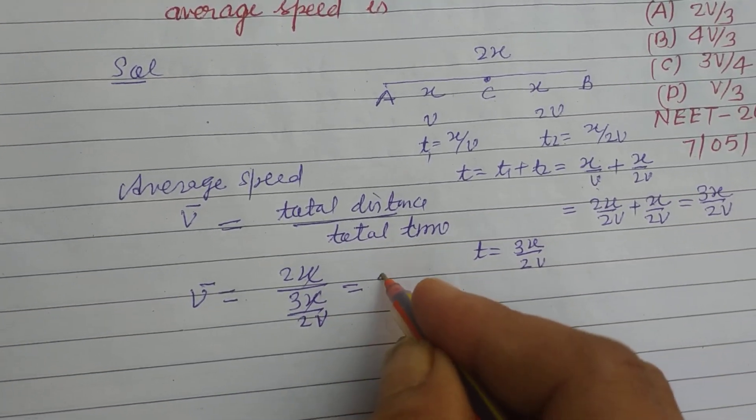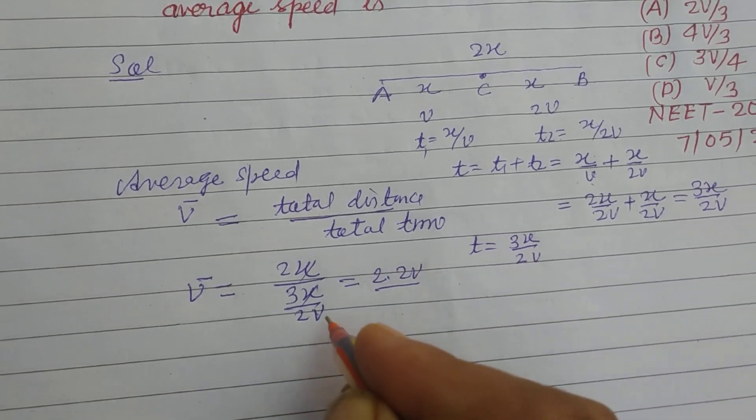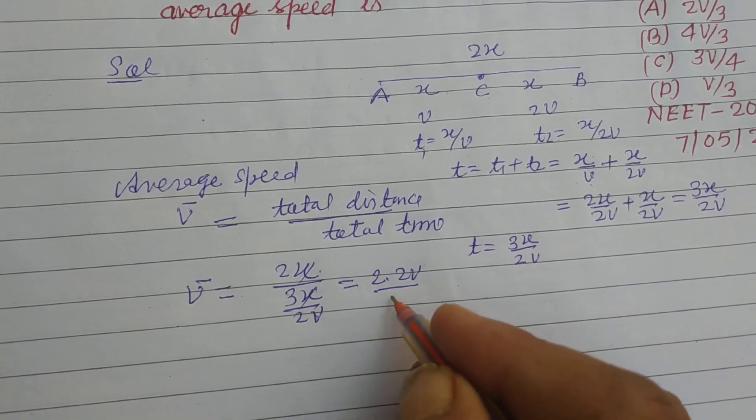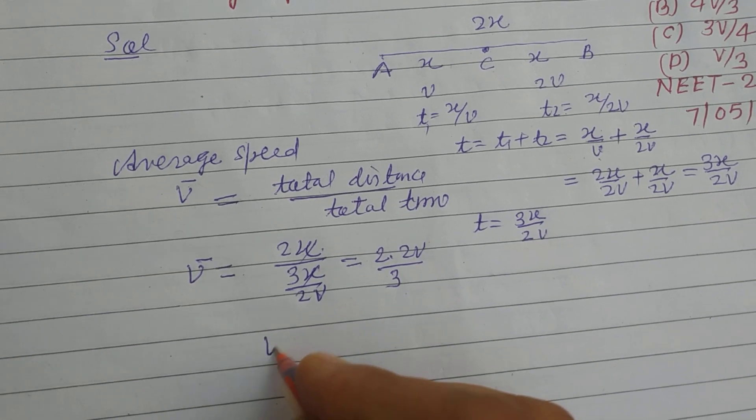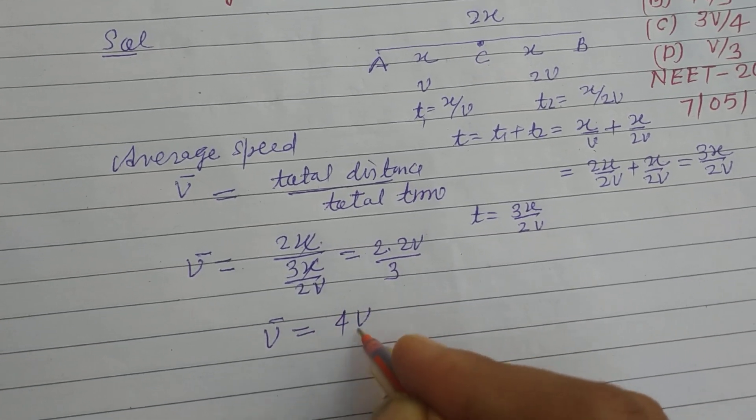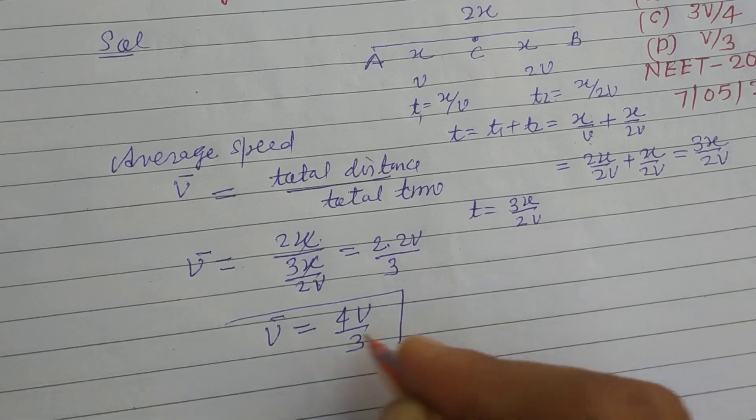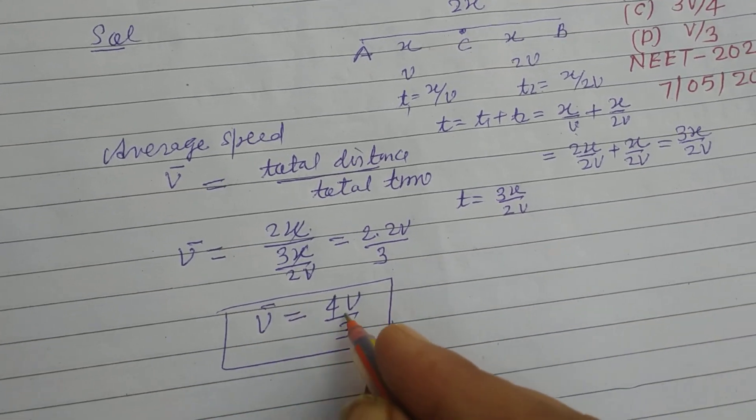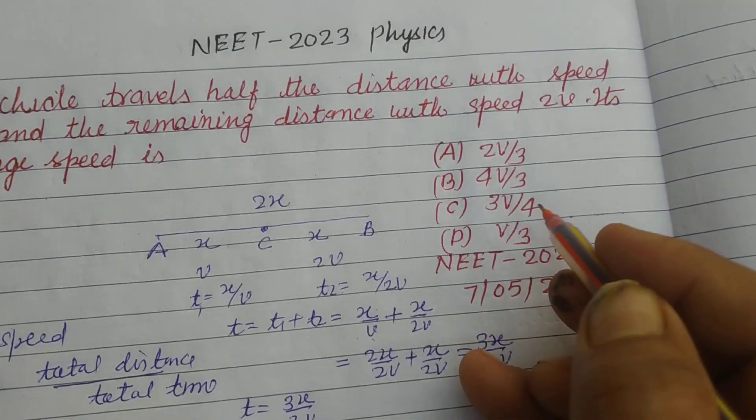So x is cancelled and 2 times 2v comes in numerator upon 3. V bar equals 4v upon 3. Therefore average speed is 4v upon 3, which is found in option B of this question.